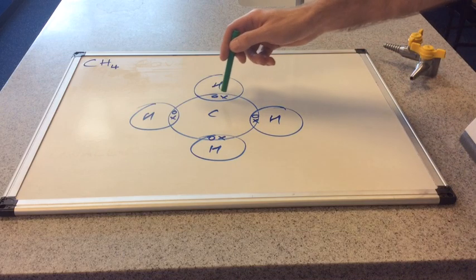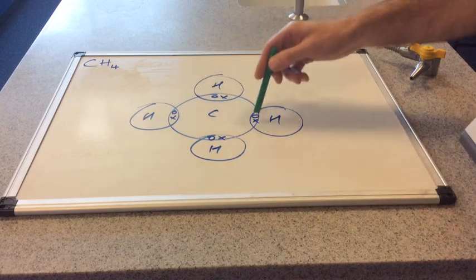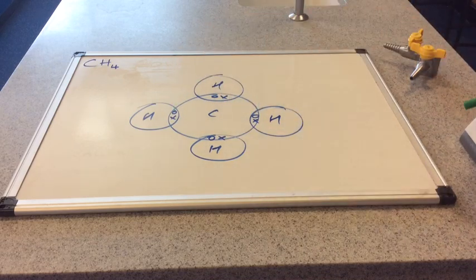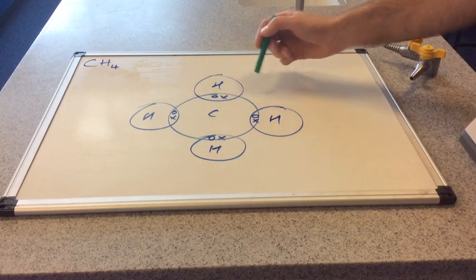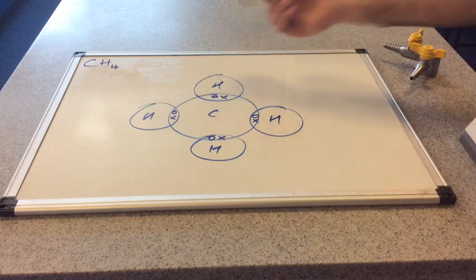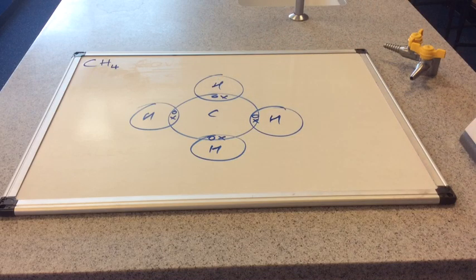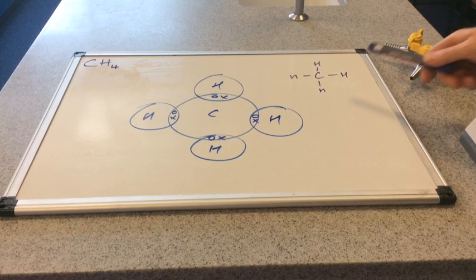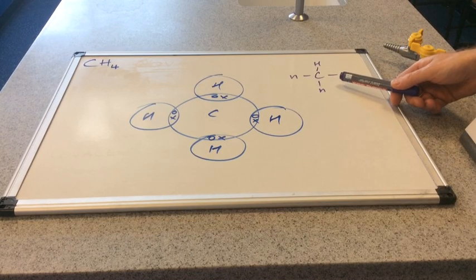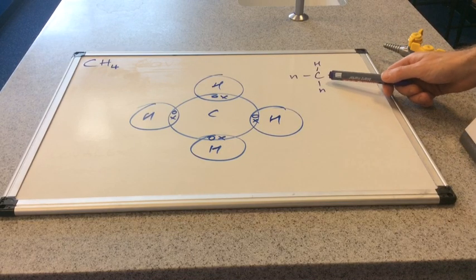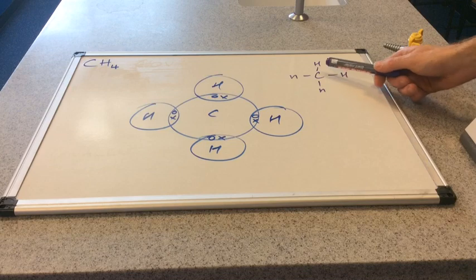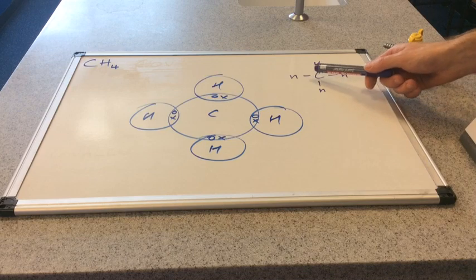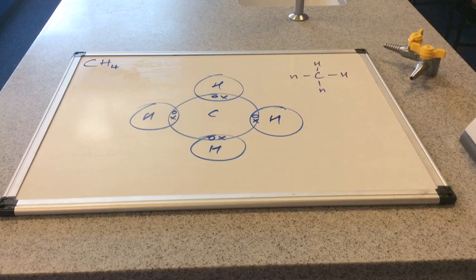Carbon needs eight electrons to fill its outer shell, and hydrogen only needs two. You can see how that's been achieved. There's also another representation for the methane molecule showing the single covalent bonds between the carbon and each hydrogen atom.